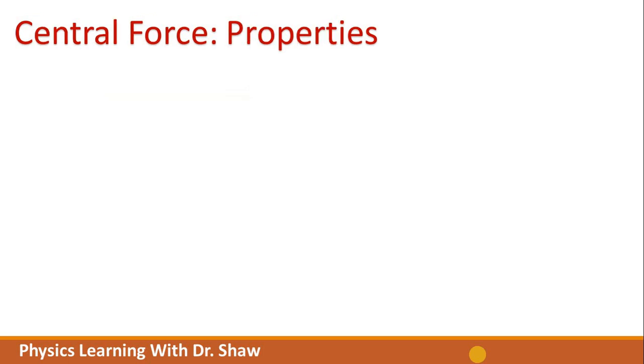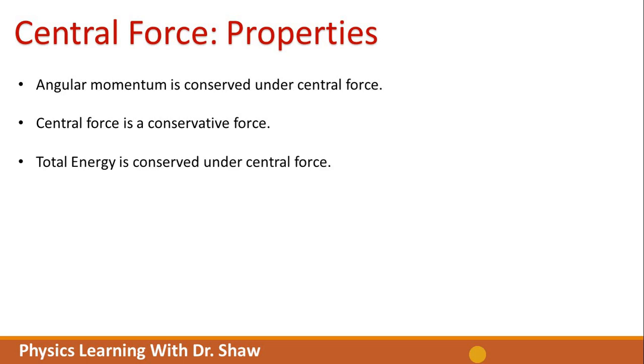If we start talking about the properties of central force, the first one is angular momentum is conserved under central force. Second one is central force is a conservative force. Third one is total energy is conserved under central force. This total energy is conserved is the consequence of central force being conservative. Fourth one is orbit of a particle always lies in a plane. This property is again the consequence of angular momentum being conserved.